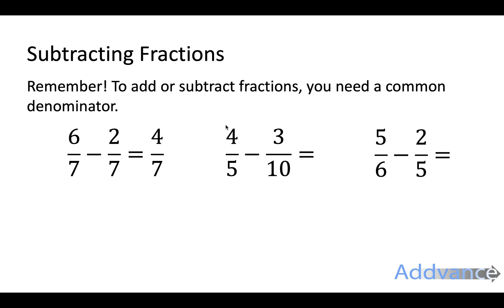Now over here 4 fifths minus 3 tenths. I make a common denominator by multiplying by 2, multiplying by 2 and I get 8 tenths minus 3 tenths. I subtract the top. 8 minus 3 is 5 tenths and that is almost the final answer. I just need to simplify this one. So always keep your eye out for fractions you can simplify.